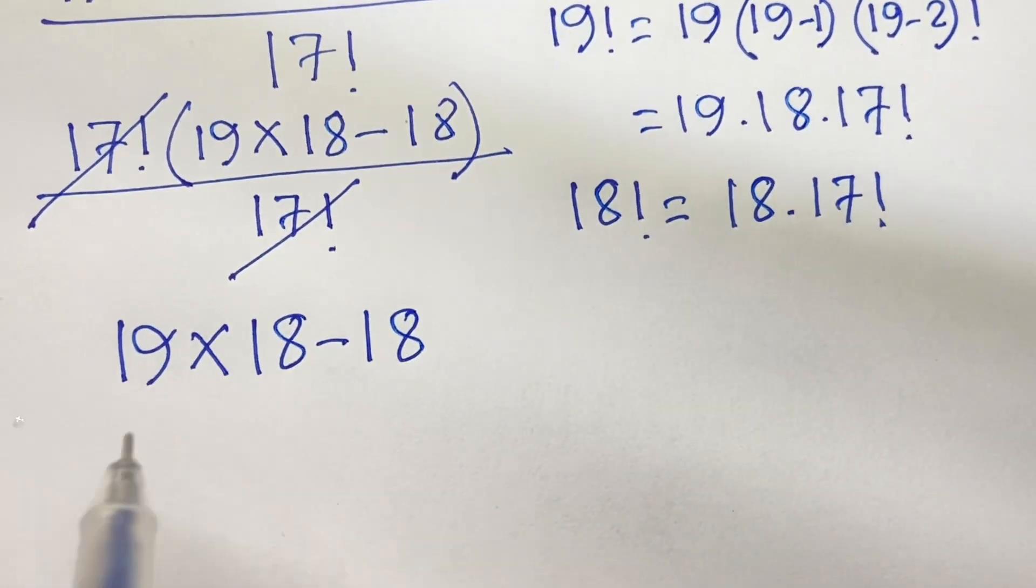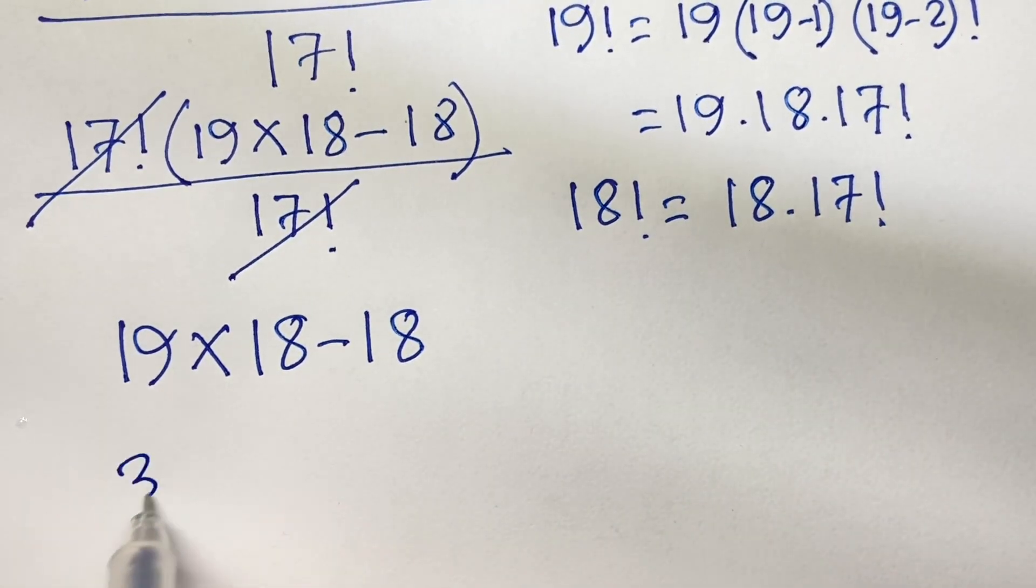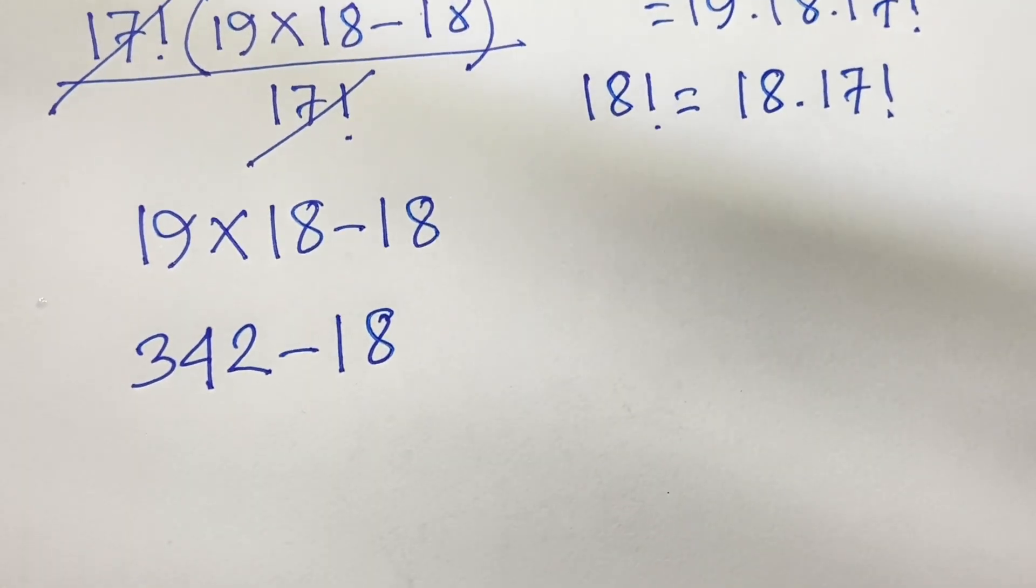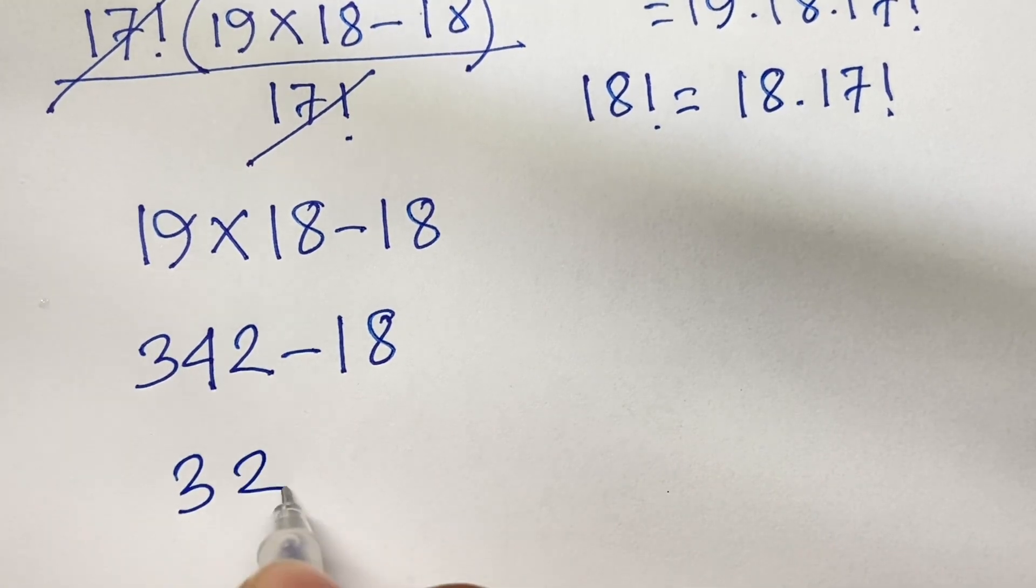We know that 19 times 18 equals 342 minus 18. So 342 minus 18 equals 324.